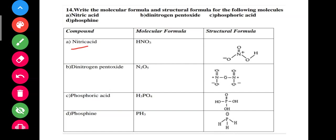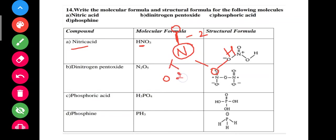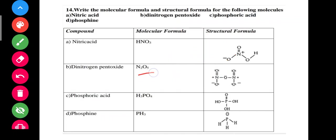The nitric acid molecule formula is HNO3. Nitrogen is the least electronegative, so it is placed in the center. Three oxygen atoms are placed around it, then hydrogen is added. Each single bond represents 2 electrons, giving 6 electrons total for three bonds. This gives the Lewis structure of HNO3.